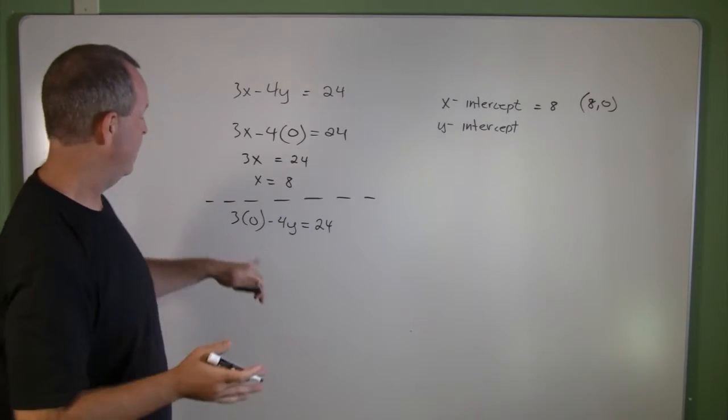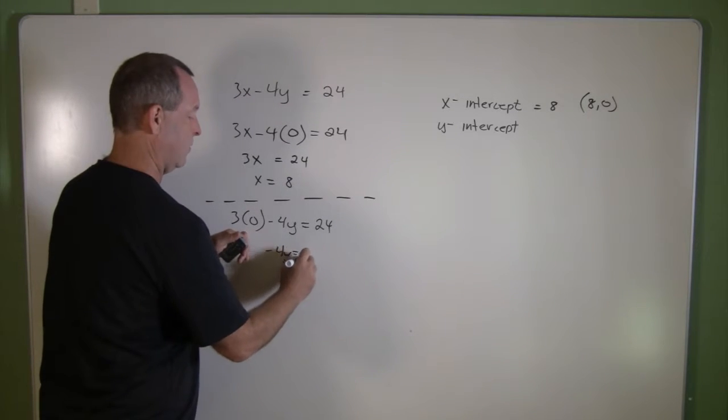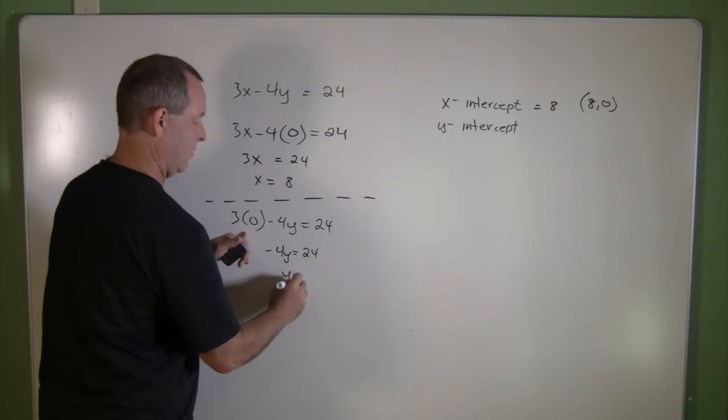Again, 0's are powerful. It wipes out an entire term. So I'm left with just minus 4y equals 24, and y equals negative 6.